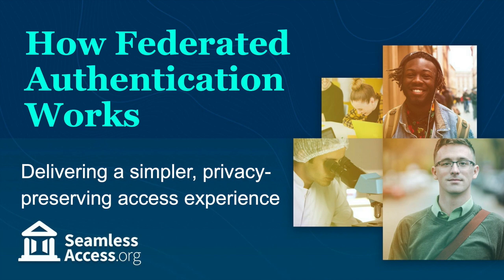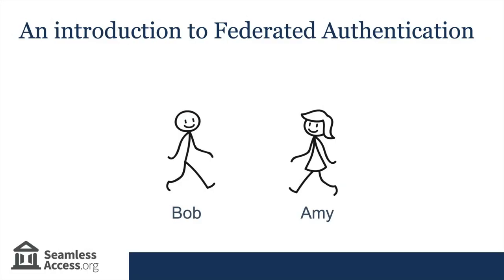In this video, I start with the basics and explain how federated authentication works. Federated authentication is an extension of single sign-on that allows you to use your institutional credentials to authenticate access to a wide variety of online resources that are provided by third parties outside your organisation. If you're unfamiliar with the term federated authentication, you may recognise the name Shibboleth instead. Shibboleth is an open-source software commonly used to implement federated authentication in research and education institutions.